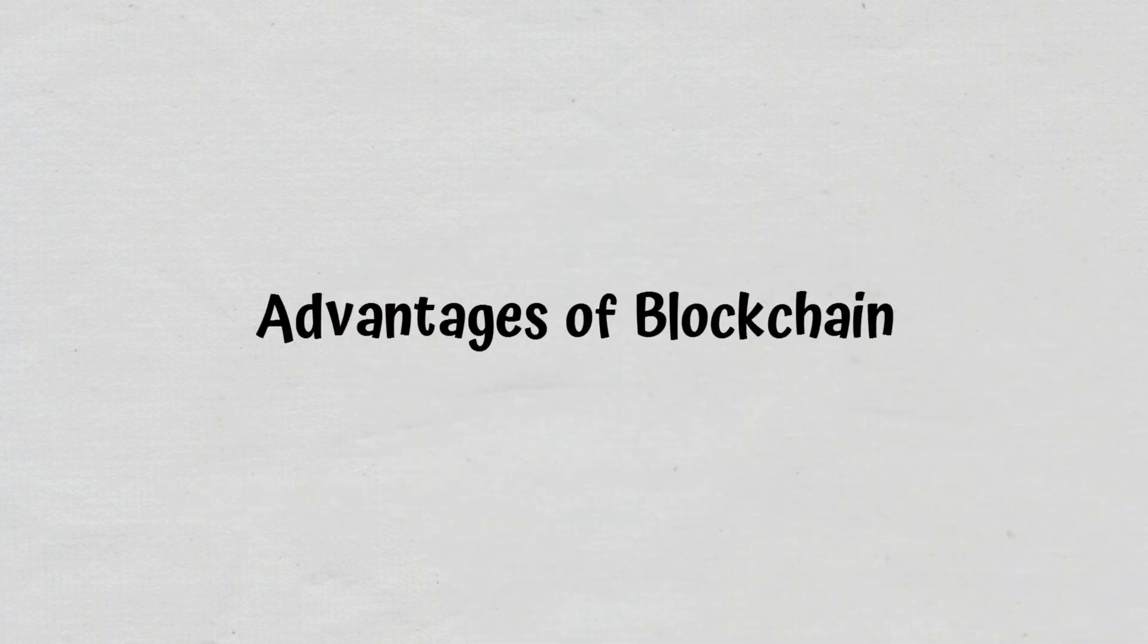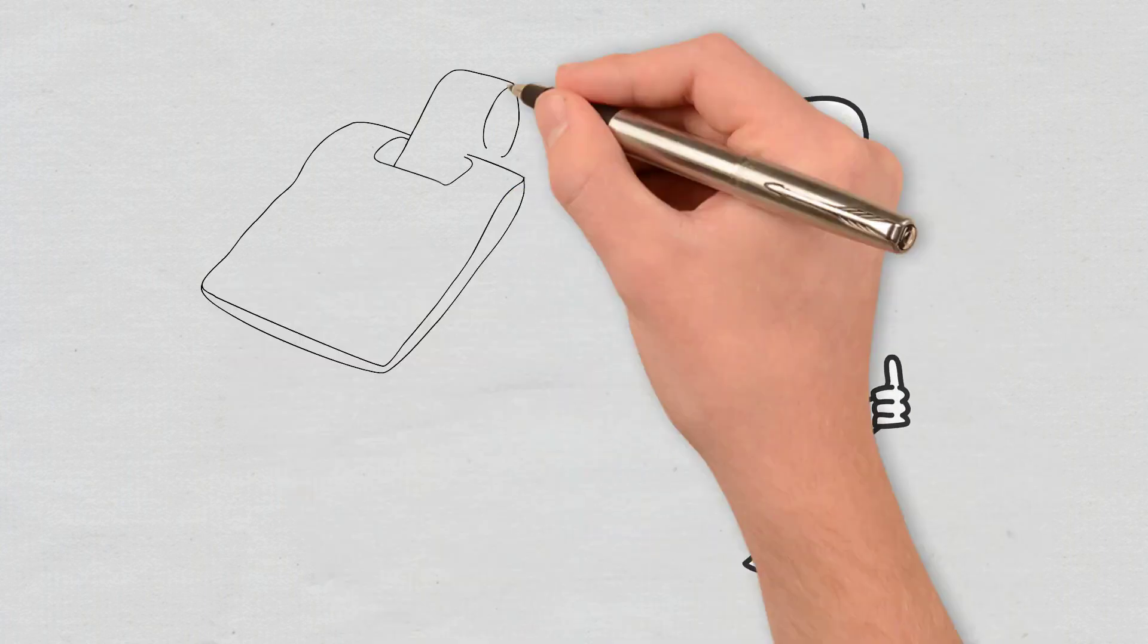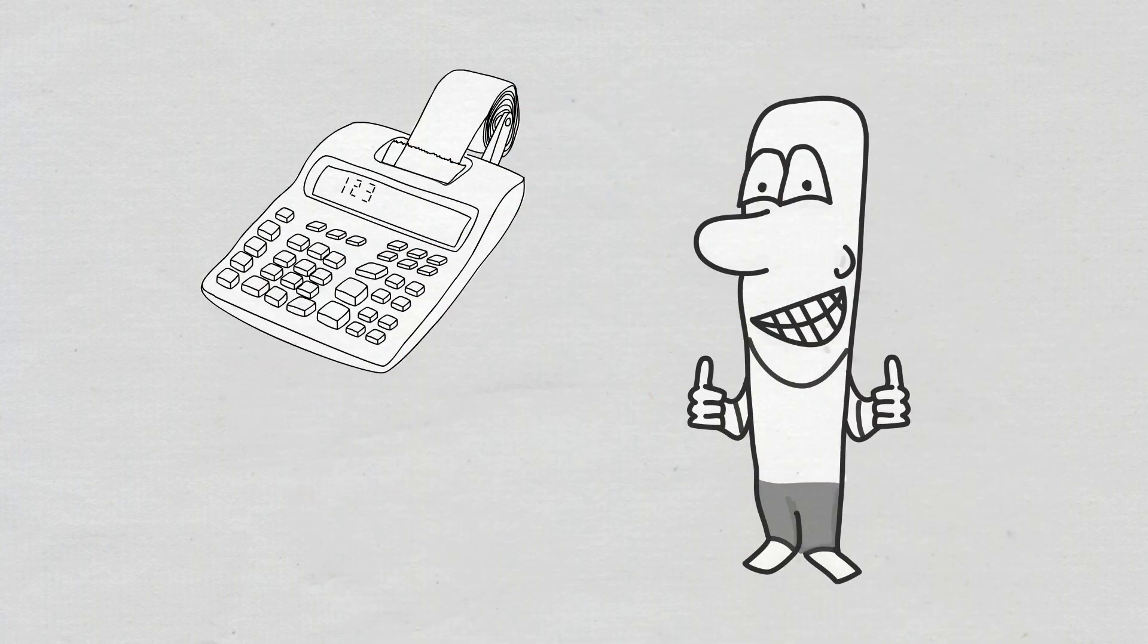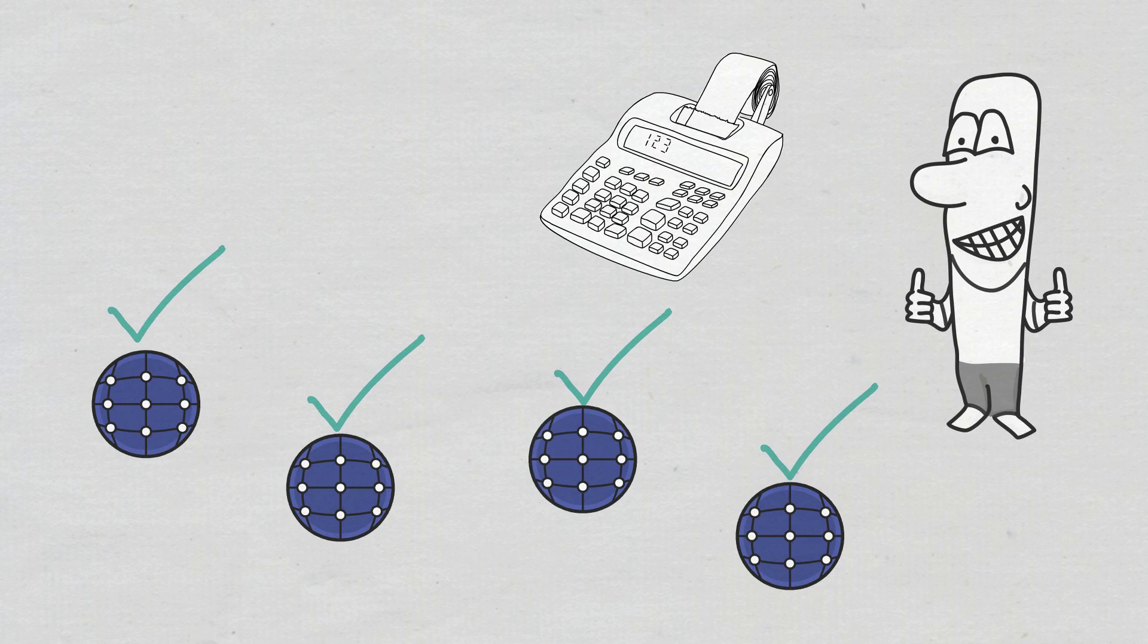Advantages of blockchain. Blockchain comes with several advantages, such as a higher accuracy of transactions. This is due to the fact that a blockchain transaction is verified by several nodes, so the chances of an error slipping are really low.